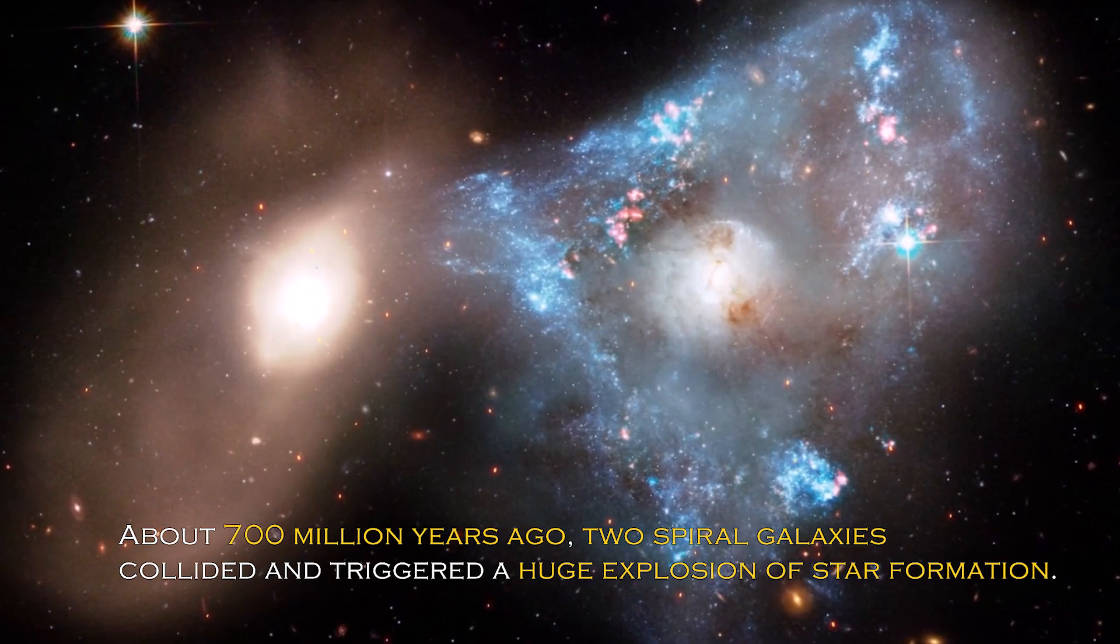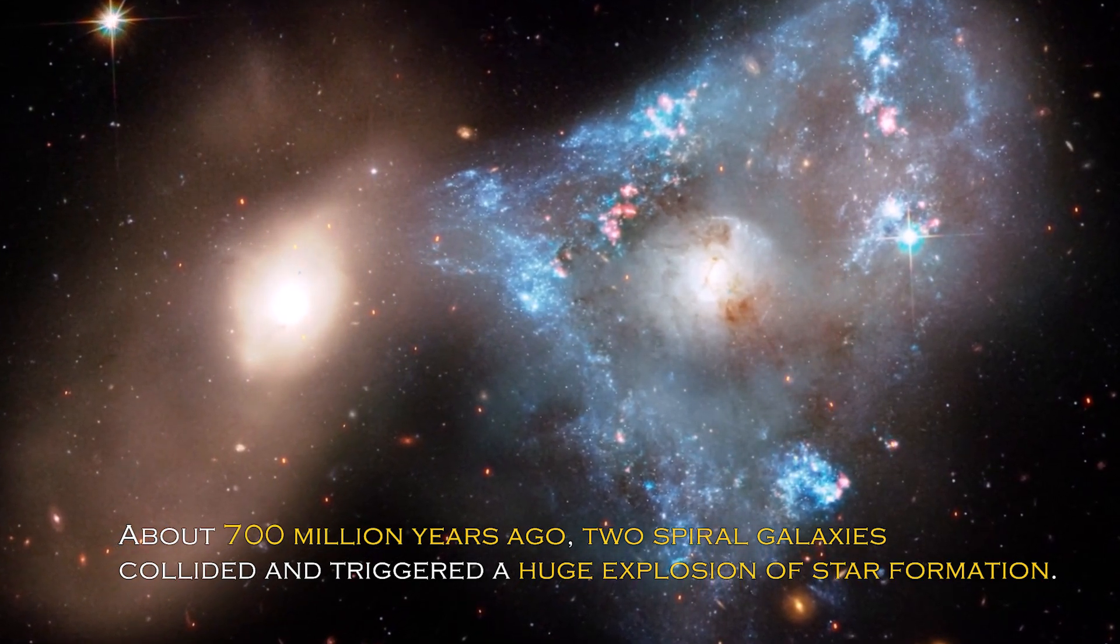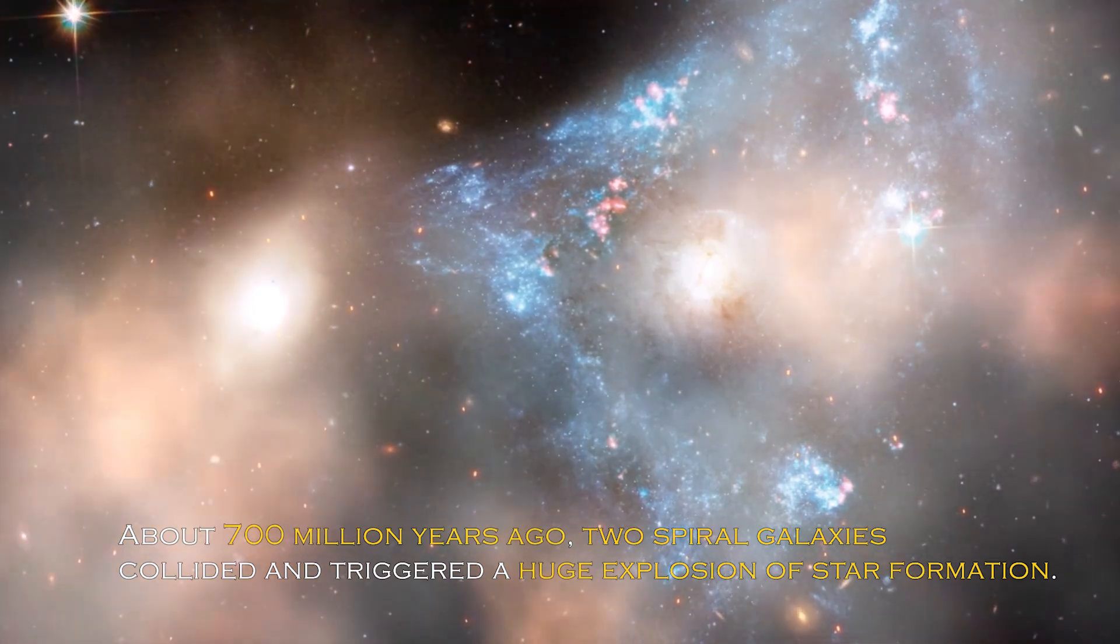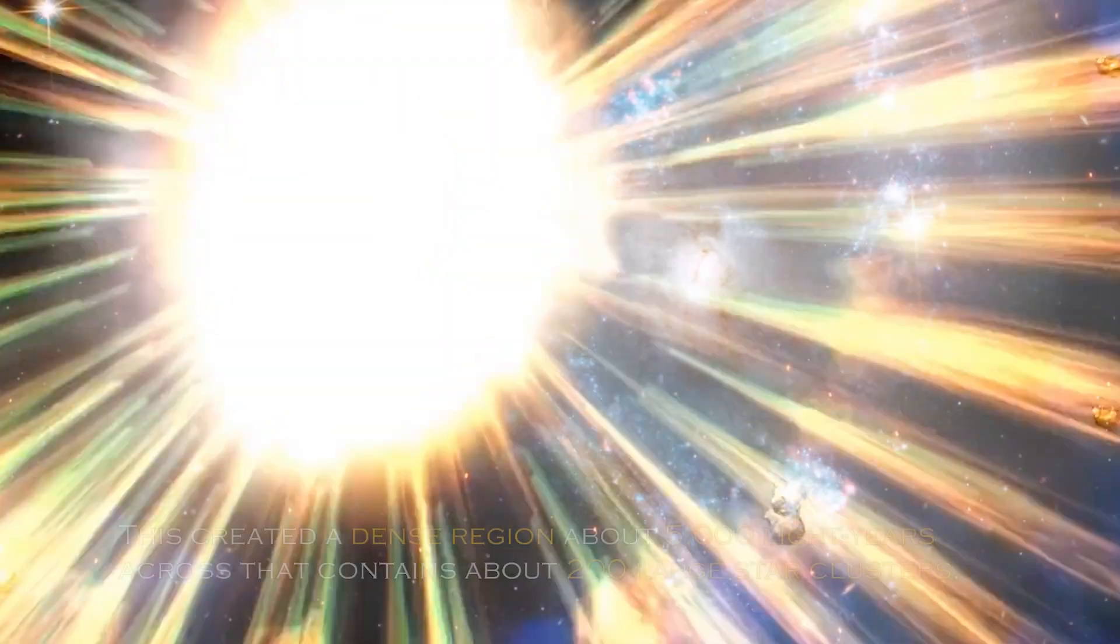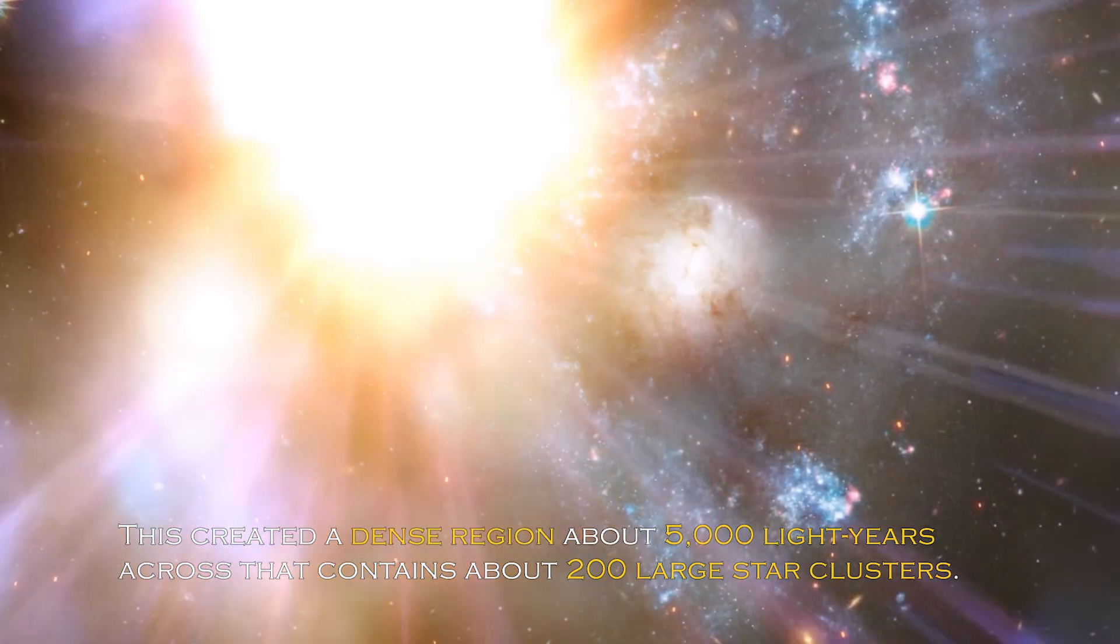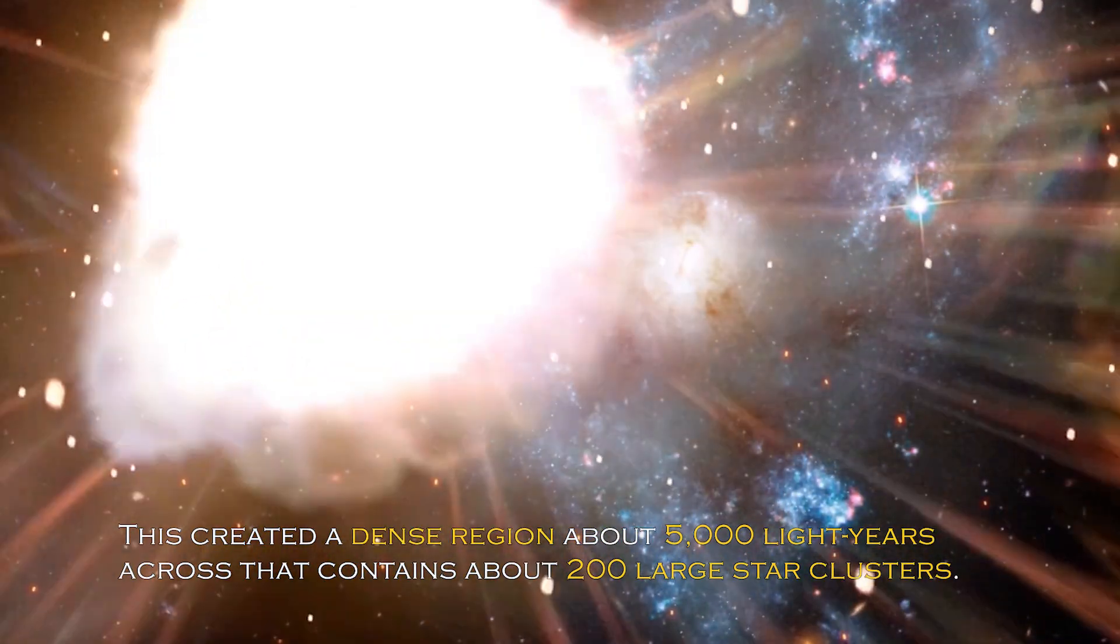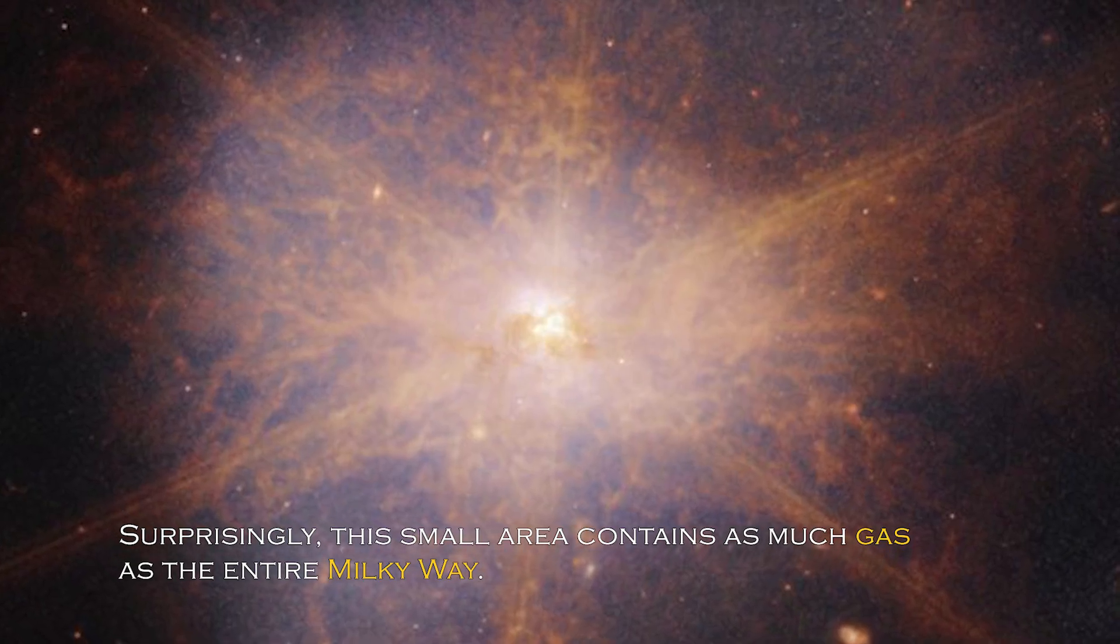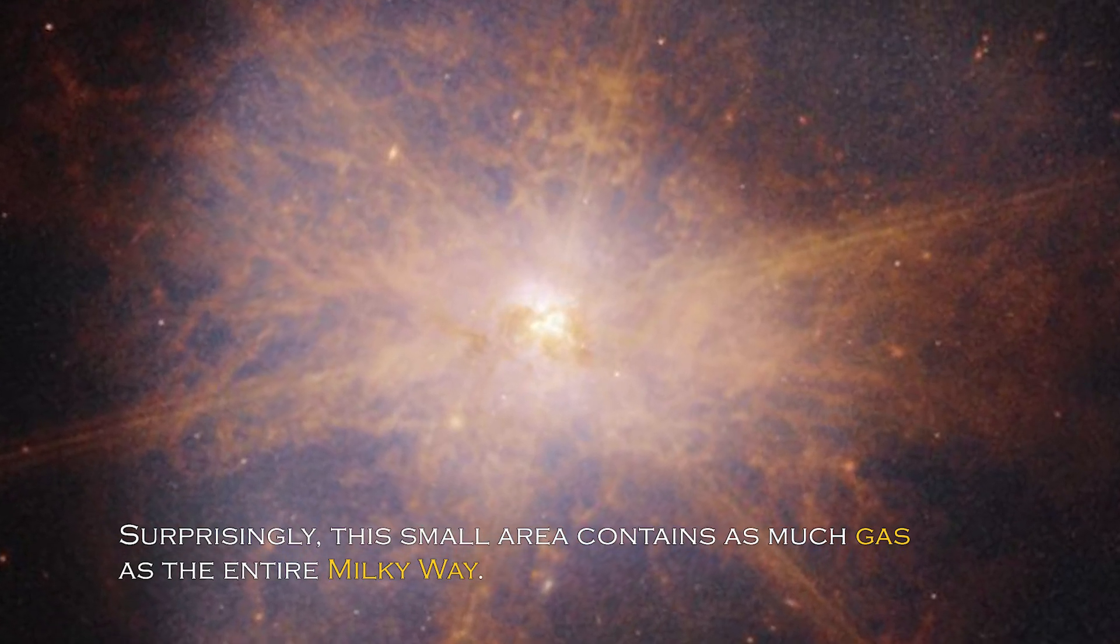About 700 million years ago, two spiral galaxies collided and triggered a huge explosion of star formation. This created a dense region about 5,000 light-years across that contains about 200 large star clusters. Surprisingly, this small area contains as much gas as the entire Milky Way.